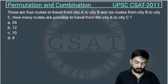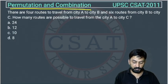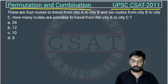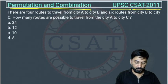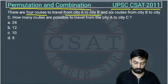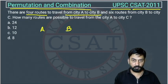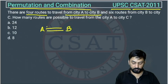This is a permutation and combination question taken from the permutation and combination chapter, asked by UPSC in the CSET exam of 2011. This kind of question almost comes every year. There are four routes to travel from city A to city B. These route-type questions are normally asked by UPSC — every two or three years they will ask one question, so the frequency is high.